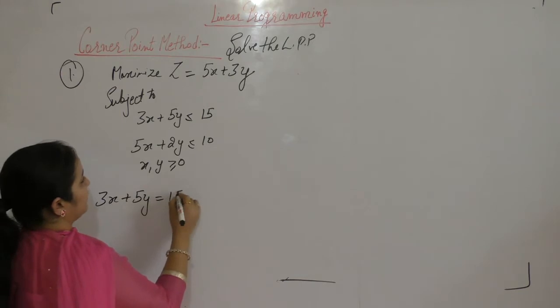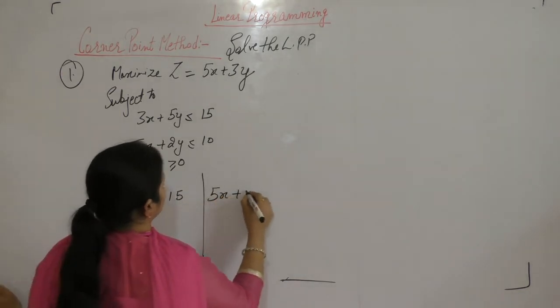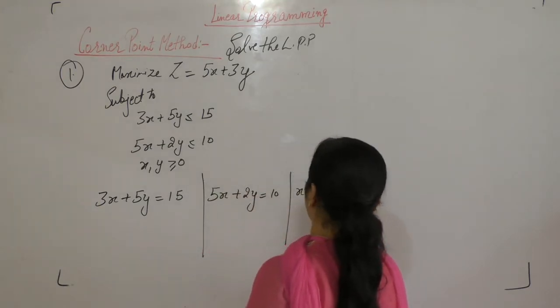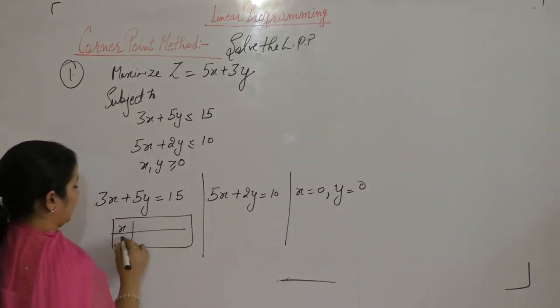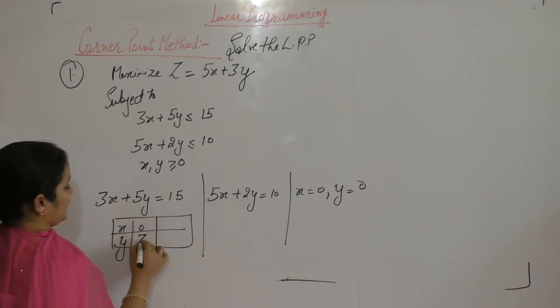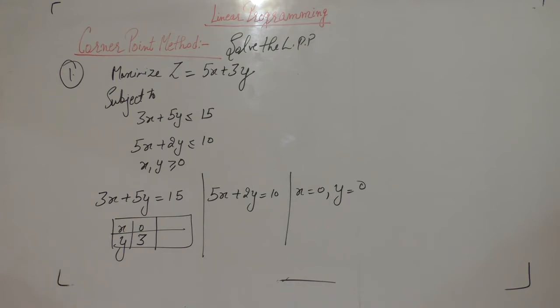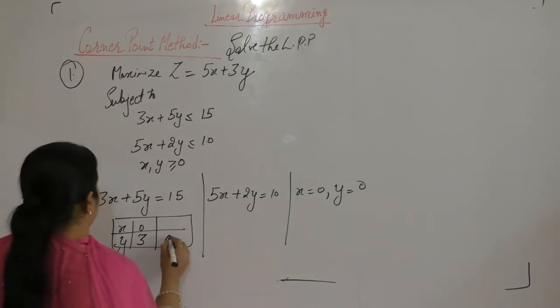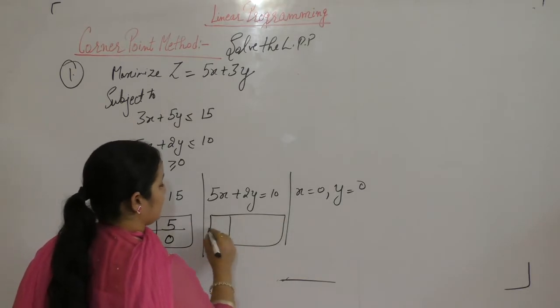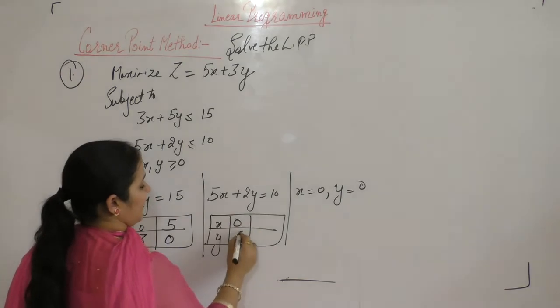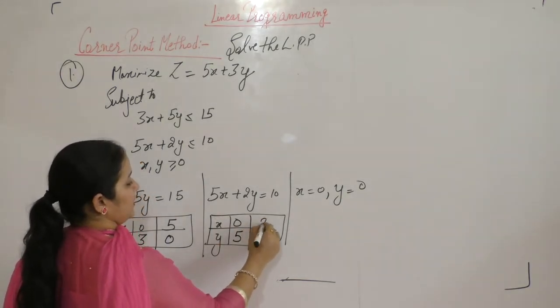Let us start. We have these three constraints. First convert them to equality. 3x plus 5y equals 15, 5x plus 2y equals 10, x equals 0 and y equals 0. Now to graph these equations, we find points. When x is 0, y is 3. When y is 0, x is 5. For the second equation, when x is 0, y is 5, and when y is 0, x is 2.